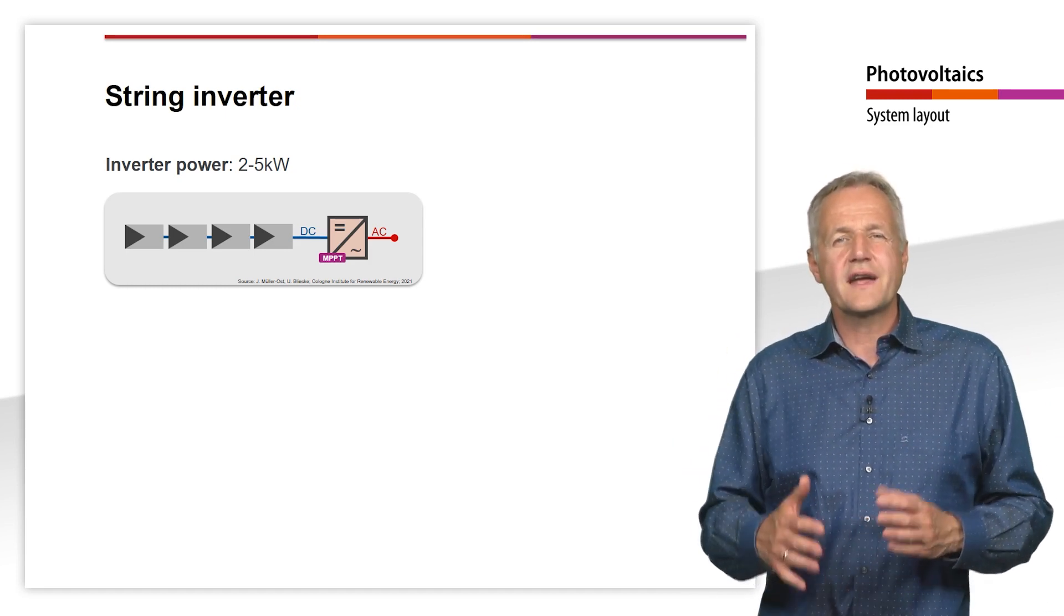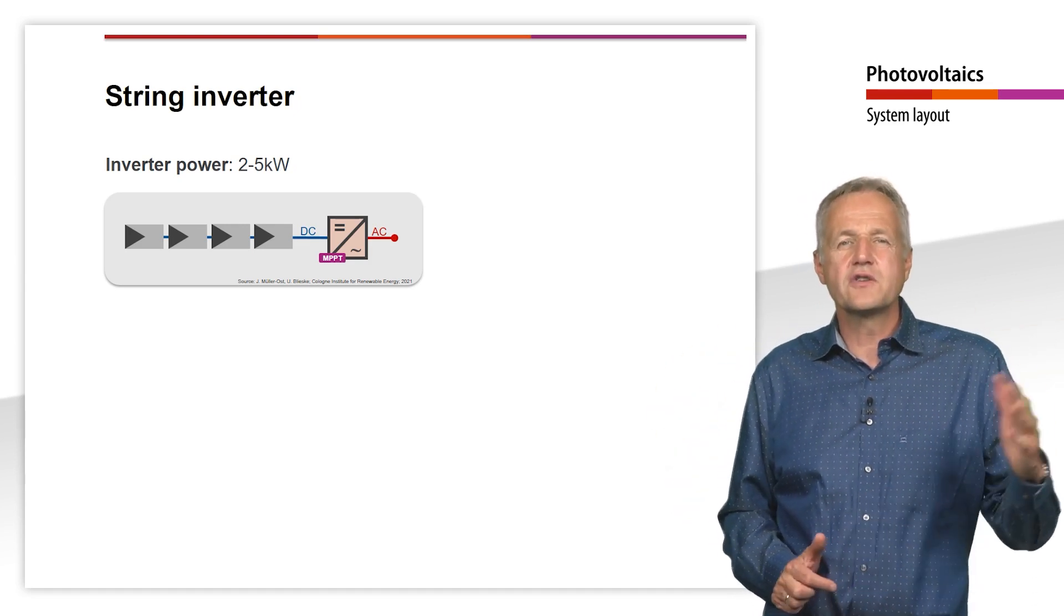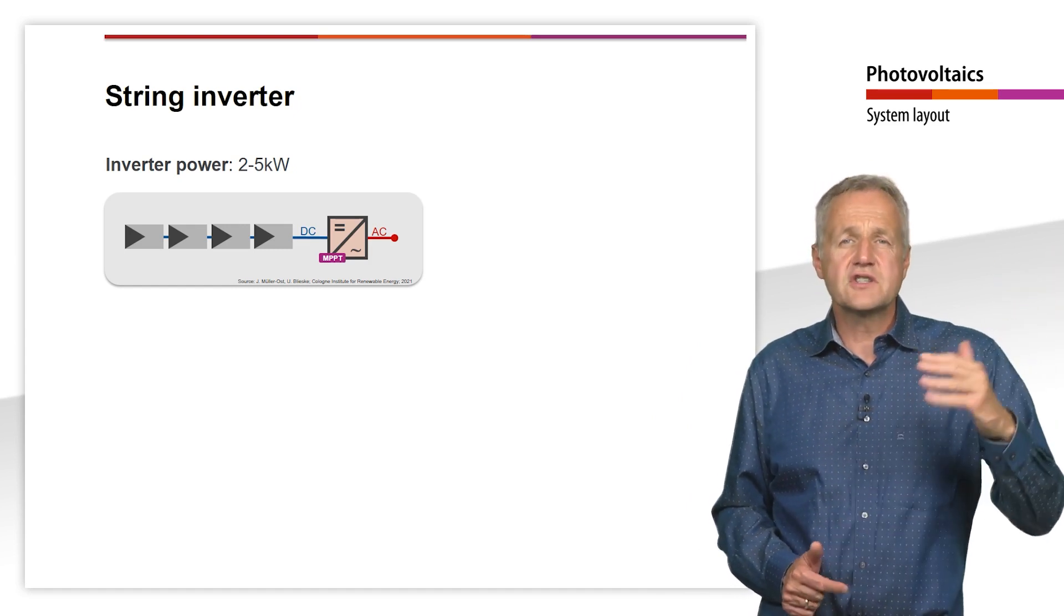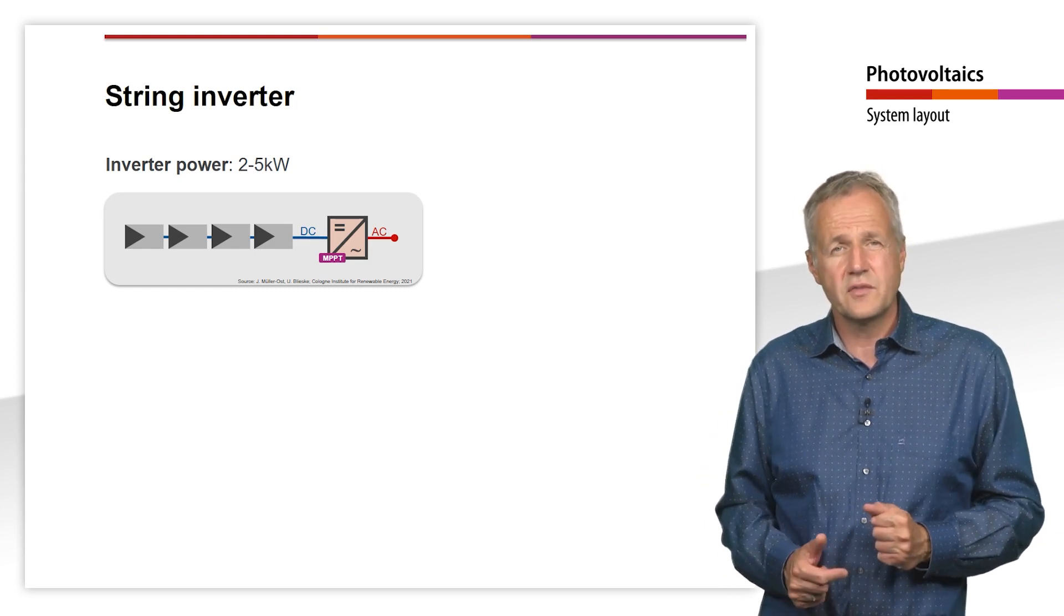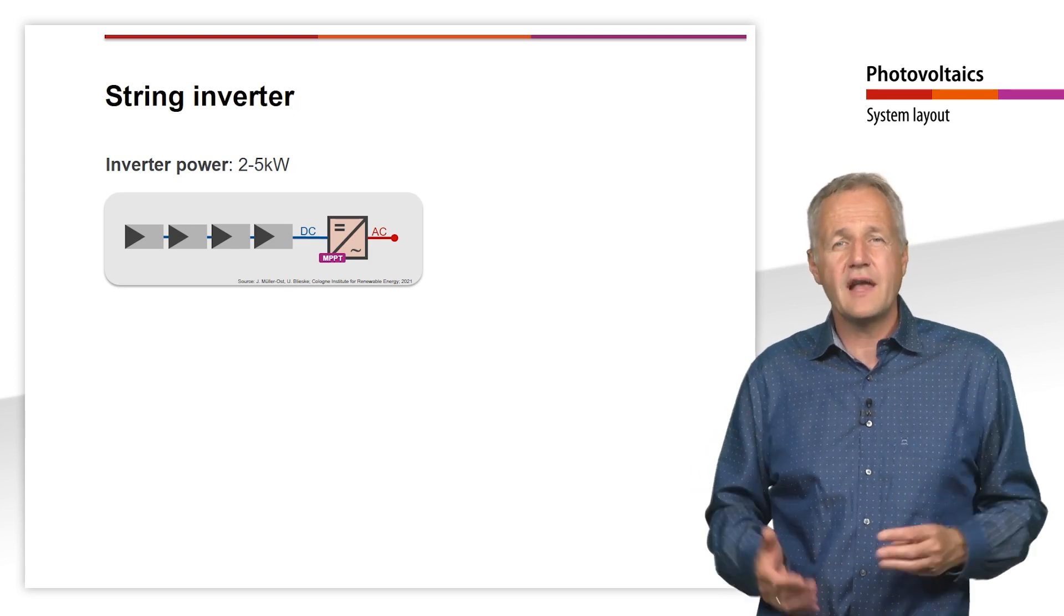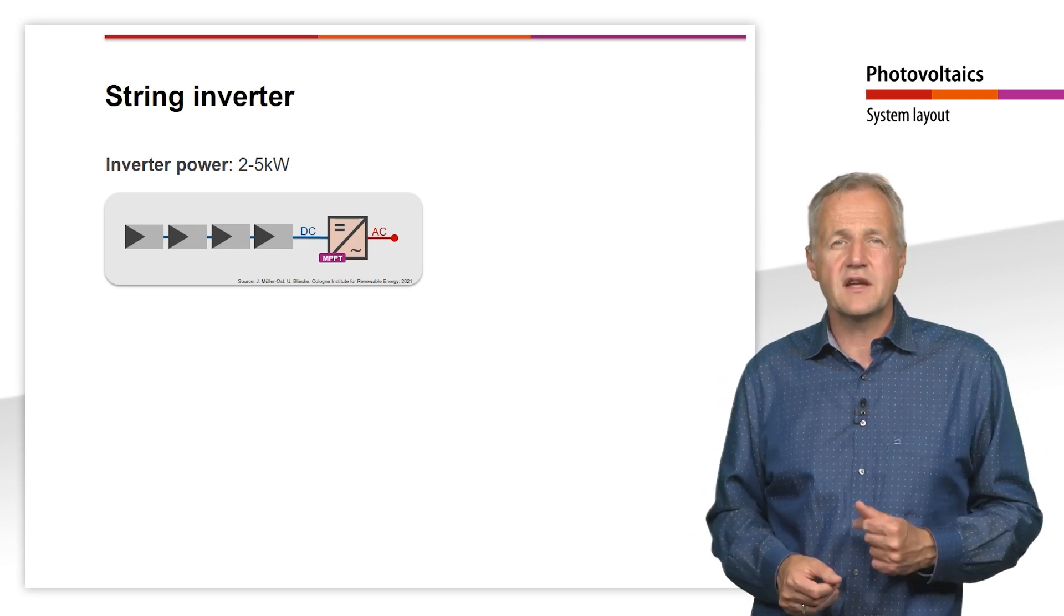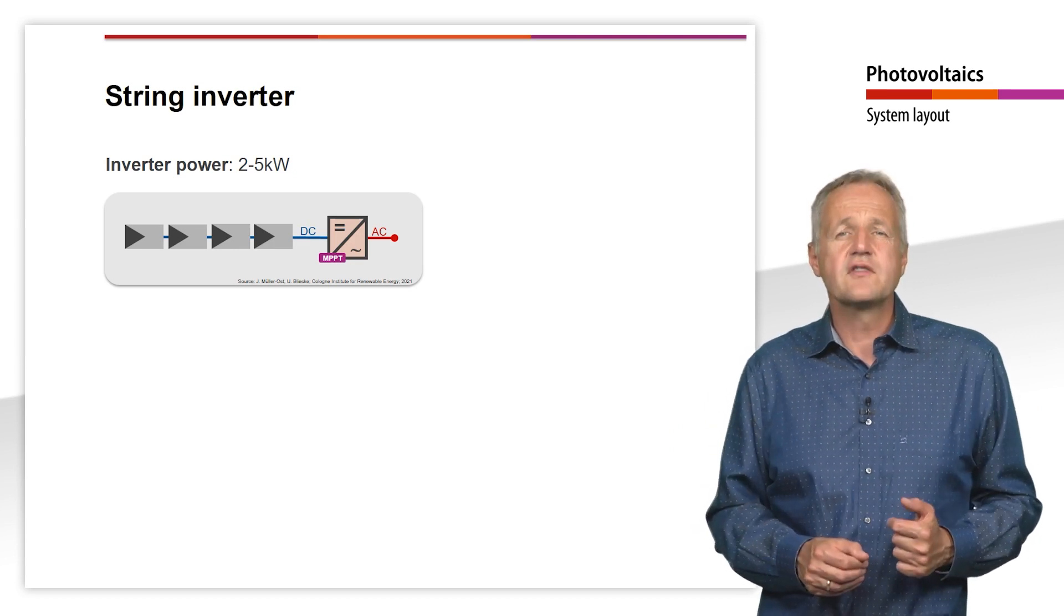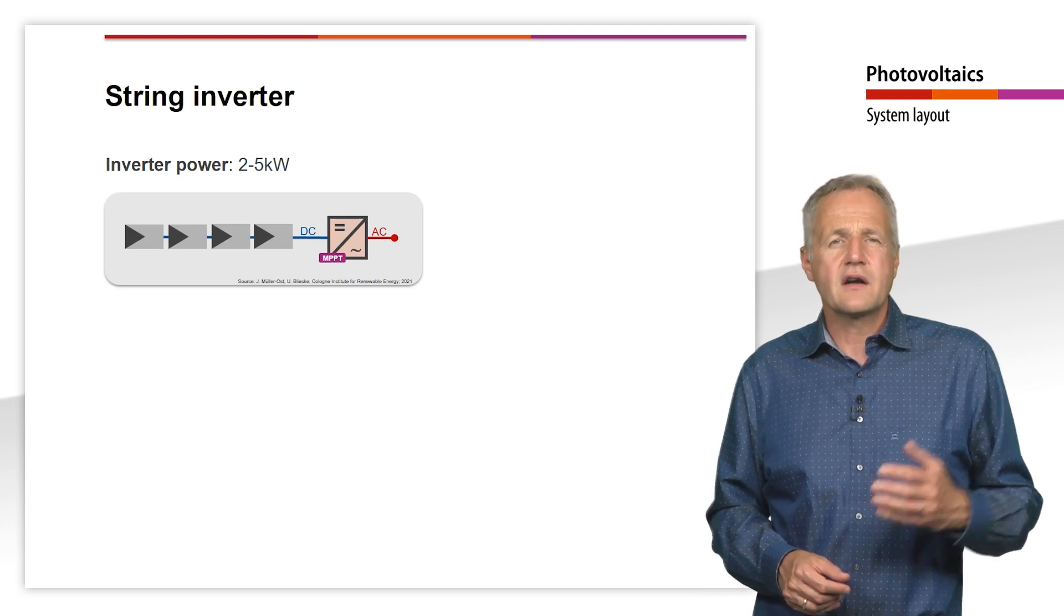Modules are therefore connected in series whenever possible. By connecting the modules in series, the module voltages add up and quickly lead to voltages of up to 1500V on the DC side of the system. Since DC voltages of 120V and above are life-threatening, various safety precautions must be taken above this value, for example double insulation of the cables and the modules. The regulations for these are country specific.